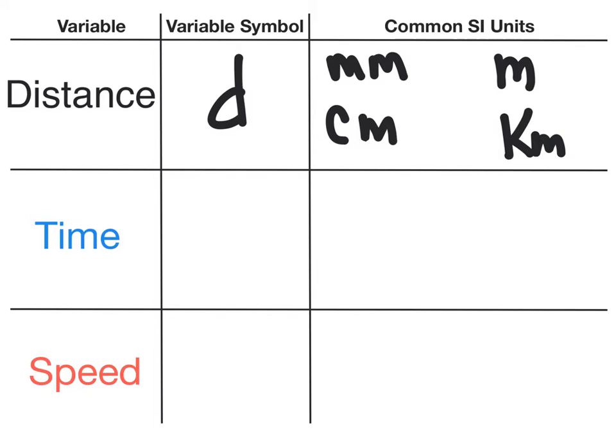The second variable is time, which is a duration between two events. The variable symbol for time is a lowercase t. Its common SI units are seconds, minutes, and hours.